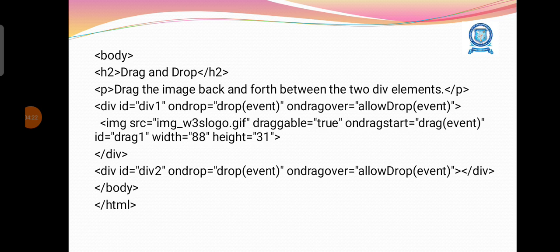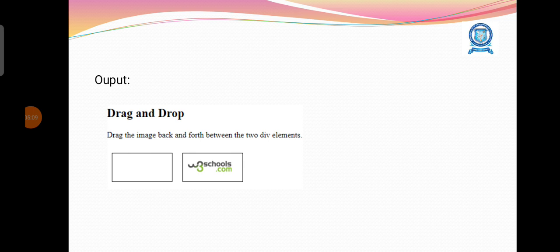Originally the image will be in div one, and we drag it from the first box to the destination div two. We included several events like ondrop equal to drop event and ondragover equal to allow drop event. We included an image with the img src tag, mentioned the file name of the image, and set the draggable attribute to true so we can drag the image. On div two, we set ondrop equal to drop event and ondragover equal to allow drop event. By these settings, it is possible to drag and drop images or any objects from one place to another in HTML web pages.